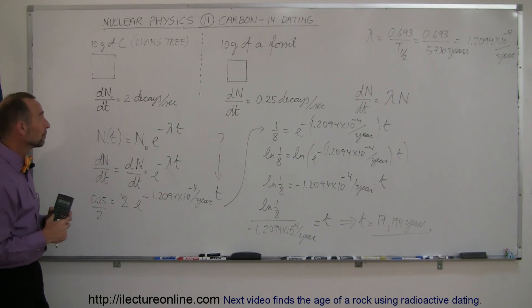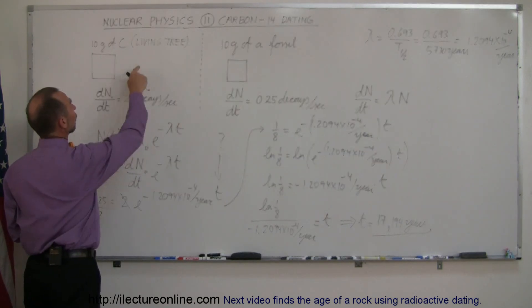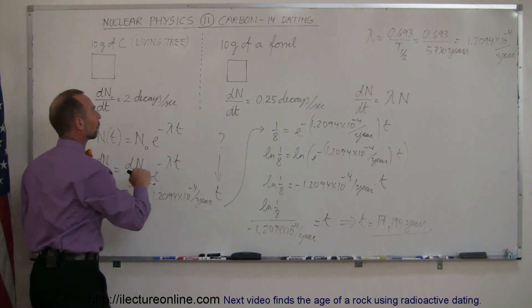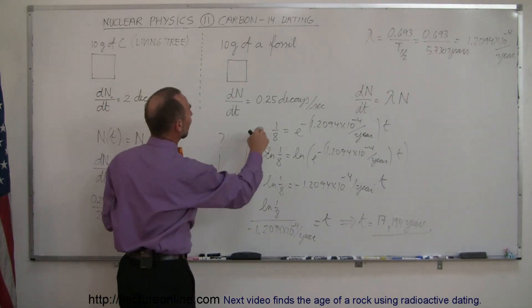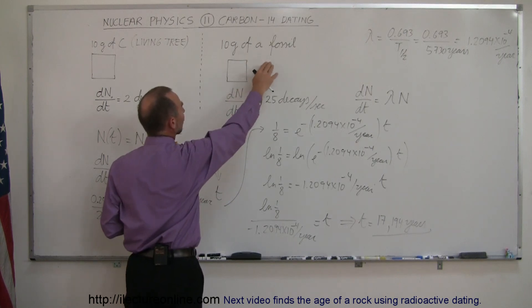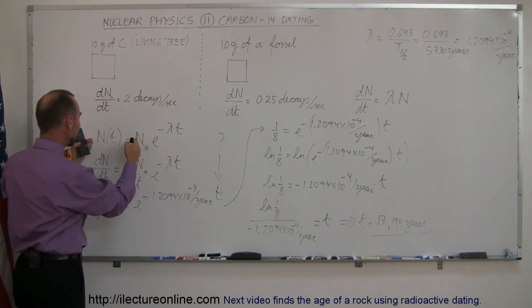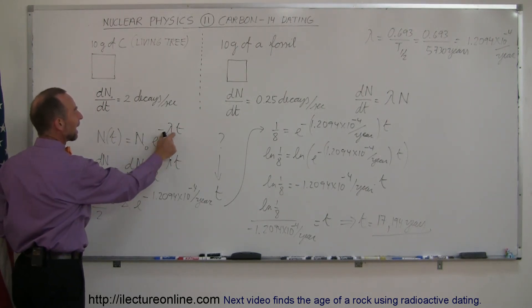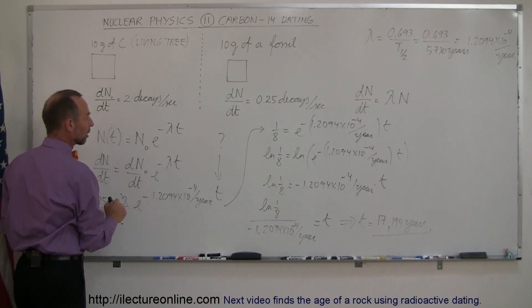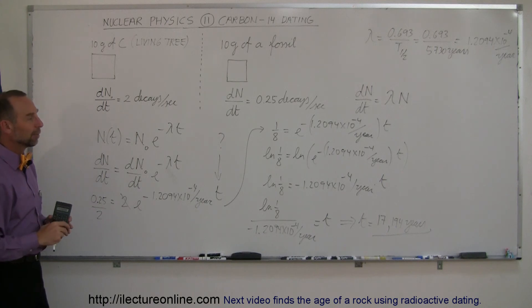Again, a quick review. We find out what the original decay rate is for living tissue or carbon coming from recently living materials. Then we get an equivalent size sample of the fossil. We measure the decays there. We plug those numbers in our decay equation. We find the decay constant. And then we take the natural log of both sides and solve for t to find the age of the fossil.